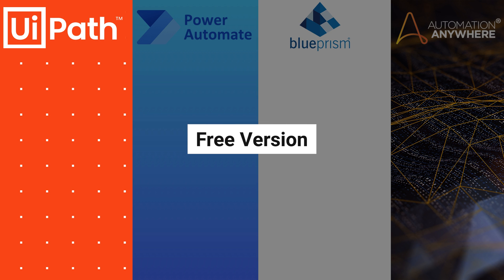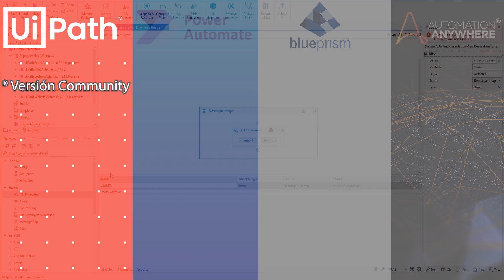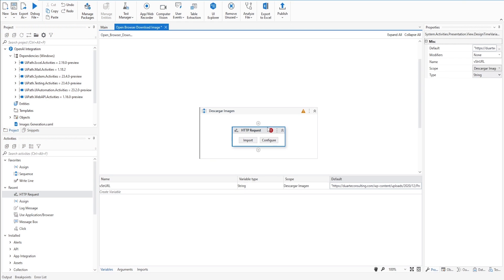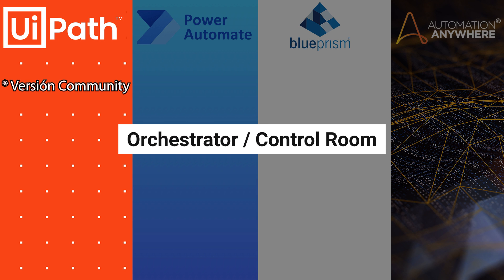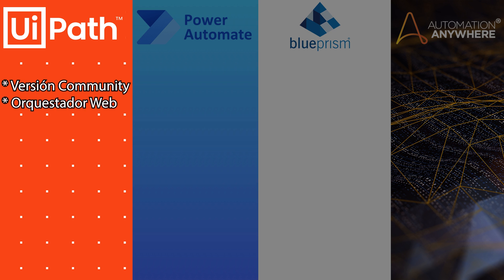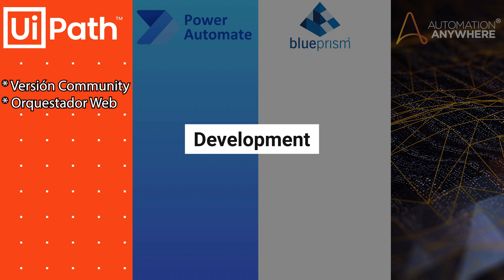UiPath offers a free version, which is their Community Edition. This version is not limited and you can do everything with it, but you cannot use it for productive work in companies. So if you want to work with a productive version, you need to purchase licenses. They have the Orchestrator or Control Room, which works from the web and is something I personally find very good. Well done for the Orchestrator.